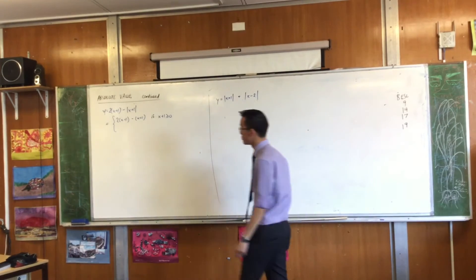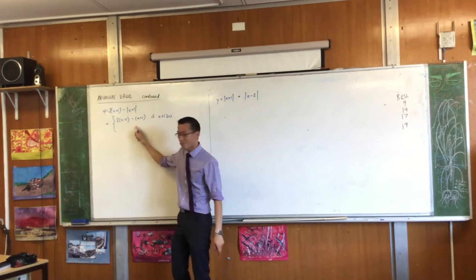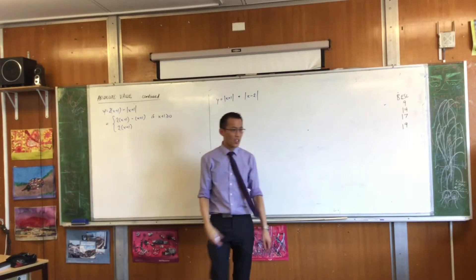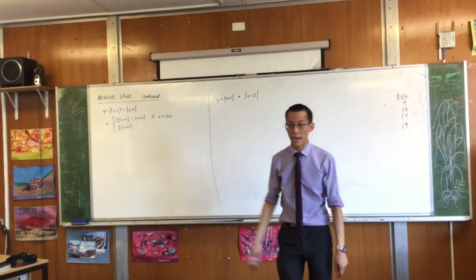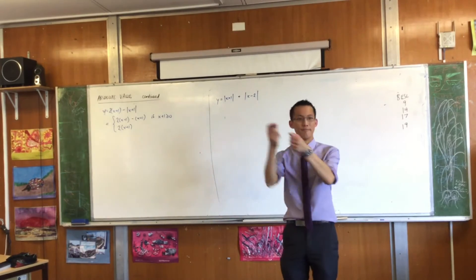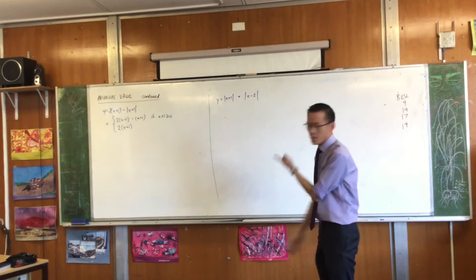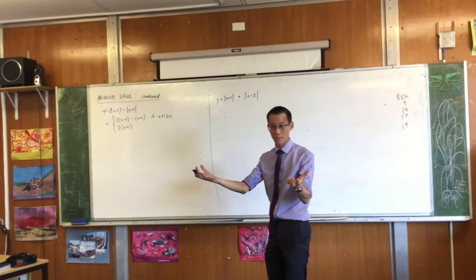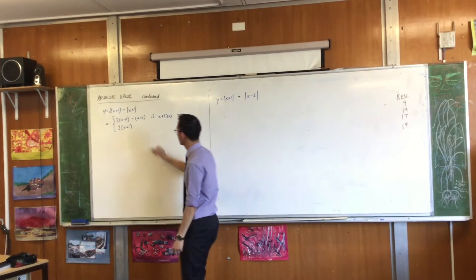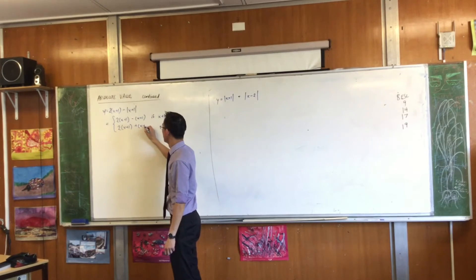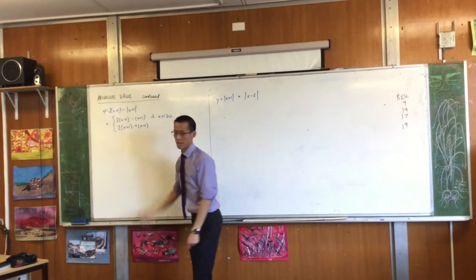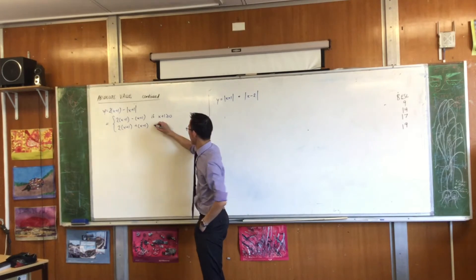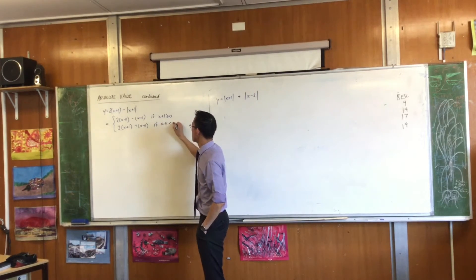That's one version. Then there's the other version: it's going to be not just regular x plus one, but negative of x plus one. However, I know there's already a minus sign hanging out the front, so that negative and the minus sign become plus. This is the other version of absolute value of x plus one when x plus one is negative.